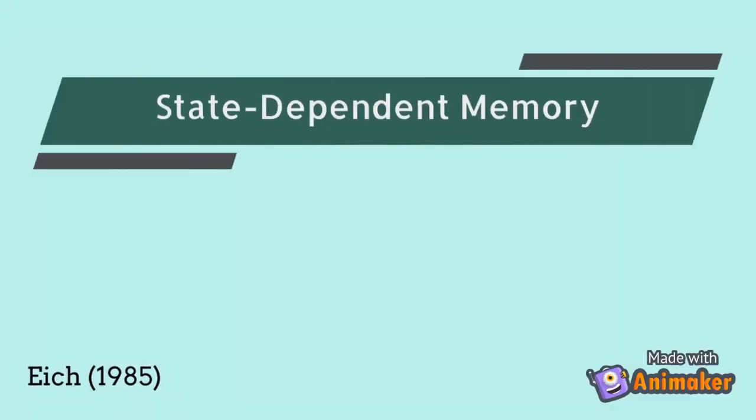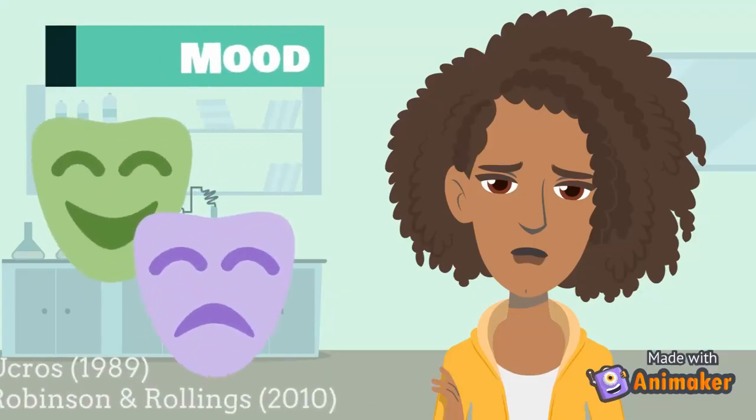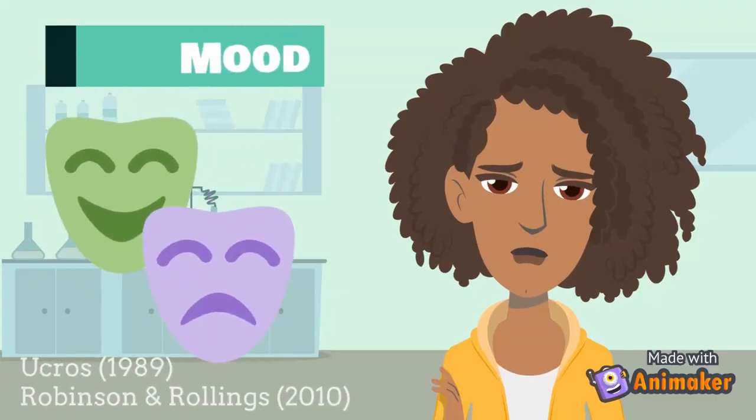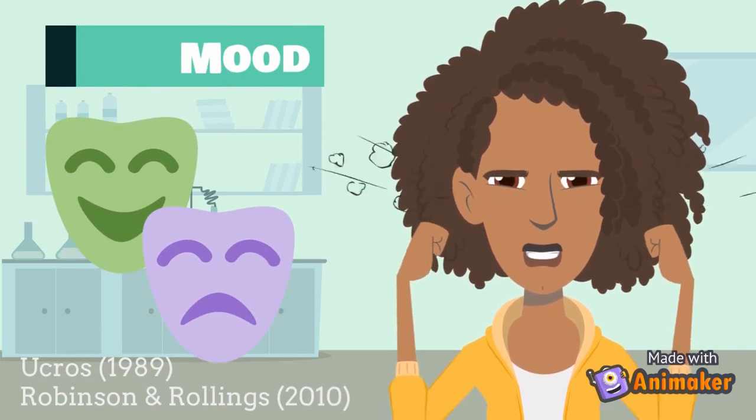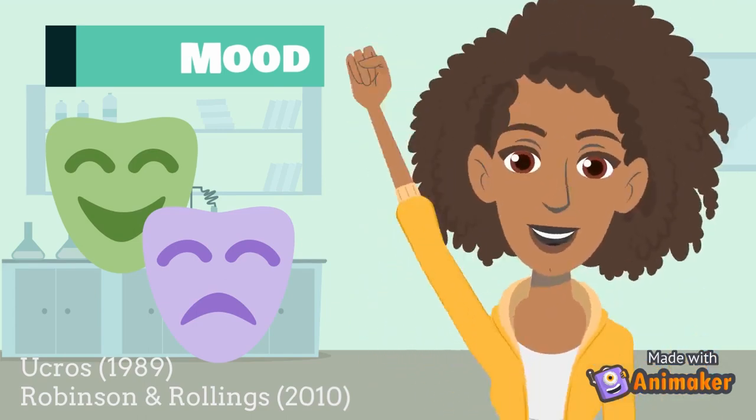A different form of encoding specificity is state-dependent memory. While context-dependent memory relies on retrieval cues in your environment, state-dependent memory is about internal cues. One example is mood. Mood is a mental state that can facilitate memory. That is, you tend to remember things better when you're in the same mood state as when you originally learned or encoded them.